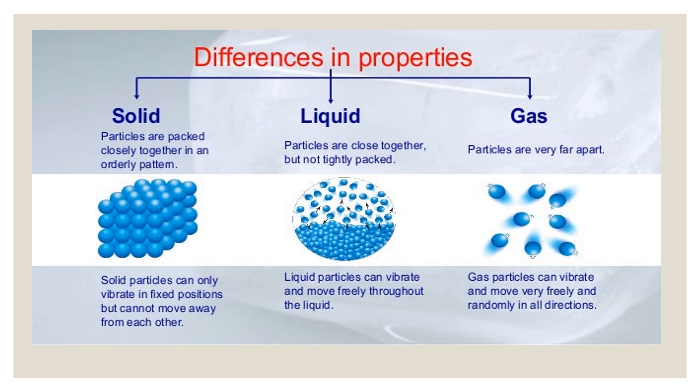Now, the differences in the properties of solid, liquid and gas. Particles are packed closely together in an orderly pattern in solids, which is why they are hard and cannot be compressed. In liquid, particles are closely together but not tightly packed. In gases, particles are very far apart from each other — so if you take a balloon filled with air and press it, you can easily compress it.